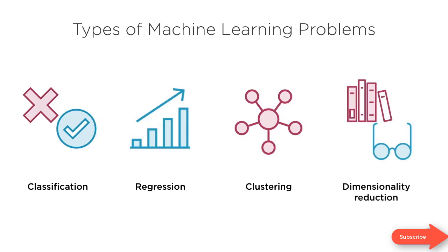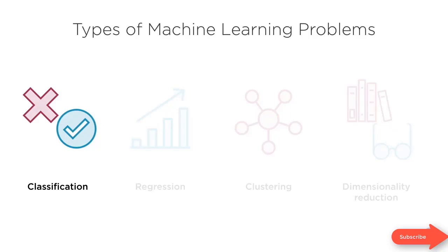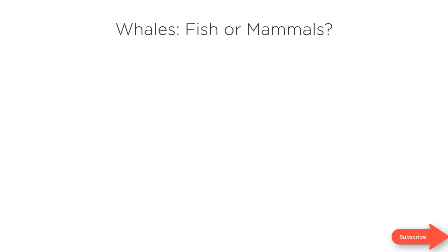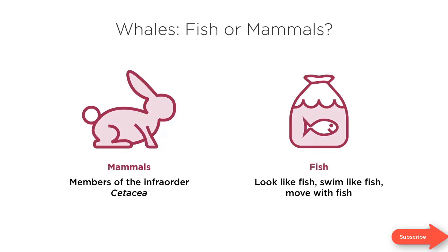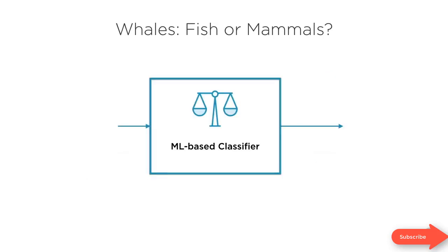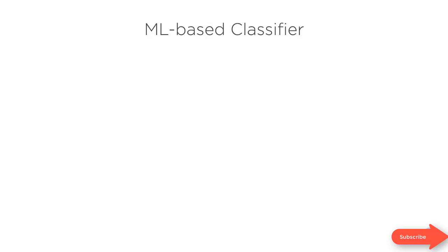This is a course on classification using scikit-learn, and we'll focus our attention on classification models. Let's say you're building a classification model to predict whether whales are fish or mammals. You can consider whales to be mammals because they are members of the infra-order Cetacea, or you might consider them fish because they look like fish, swim like fish, and move with fish. Your objective is to build a machine learning based classifier to differentiate between fish and mammals and classify whales.